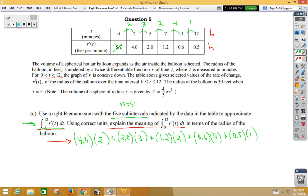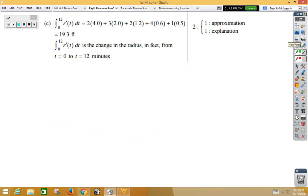So, let's see how AP would grade that. You've got your approximation. This time was worth one point, so set up and answer. And then your explanation, the change in the radius in feet during that time frame. One point.